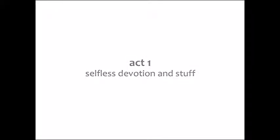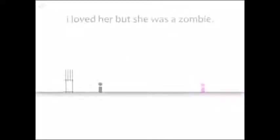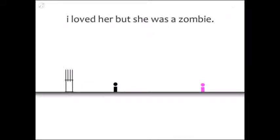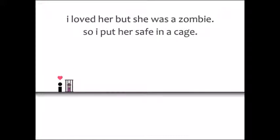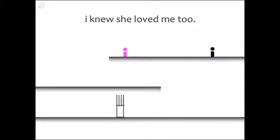Act 1. Selfless devotion and stuff. I loved her, but she was a zombie. Am I supposed to let her kill me? Guess not. What's this thing? Oh, so I put her safe in a cage. That seems really messed up. Not gonna lie. I knew she loved me too. Why? Because when she kills you, she gets a heart?